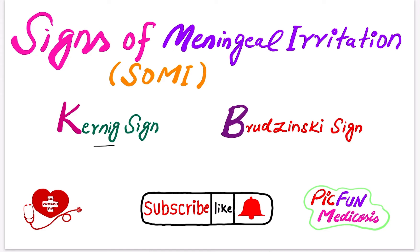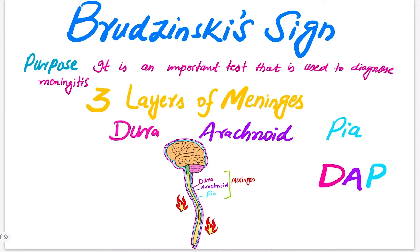Today I will discuss the Brzezinski sign. Brzezinski sign is an important sign used to diagnose meningitis. Meningitis is the inflammation of the meninges. The meninges are the coverings around the brain and spinal cord. There are three layers: the dura mater, the arachnoid mater, and the pia mater. The dura mater is the toughest or most durable layer, the arachnoid mater is in the form of a mesh or net.